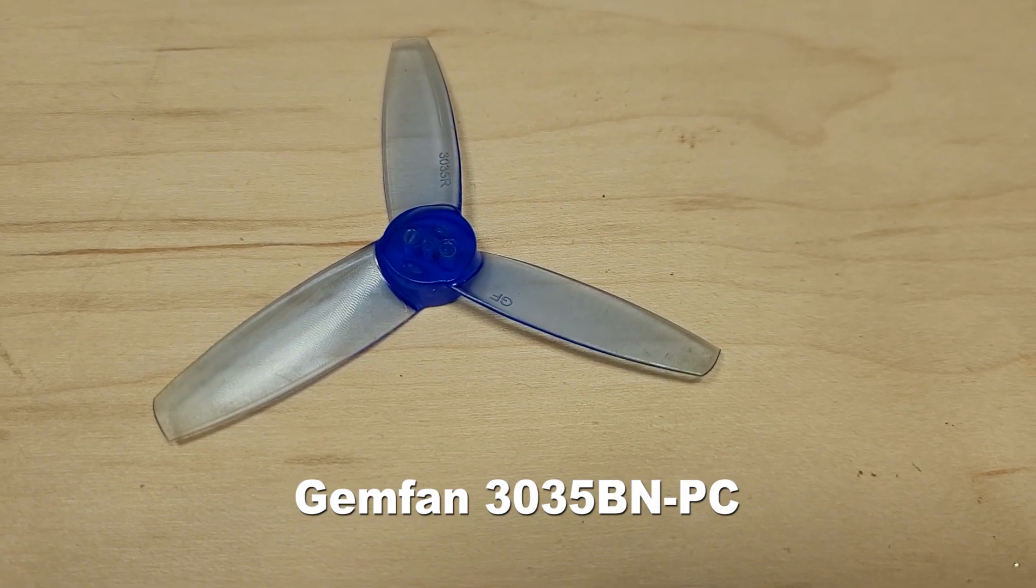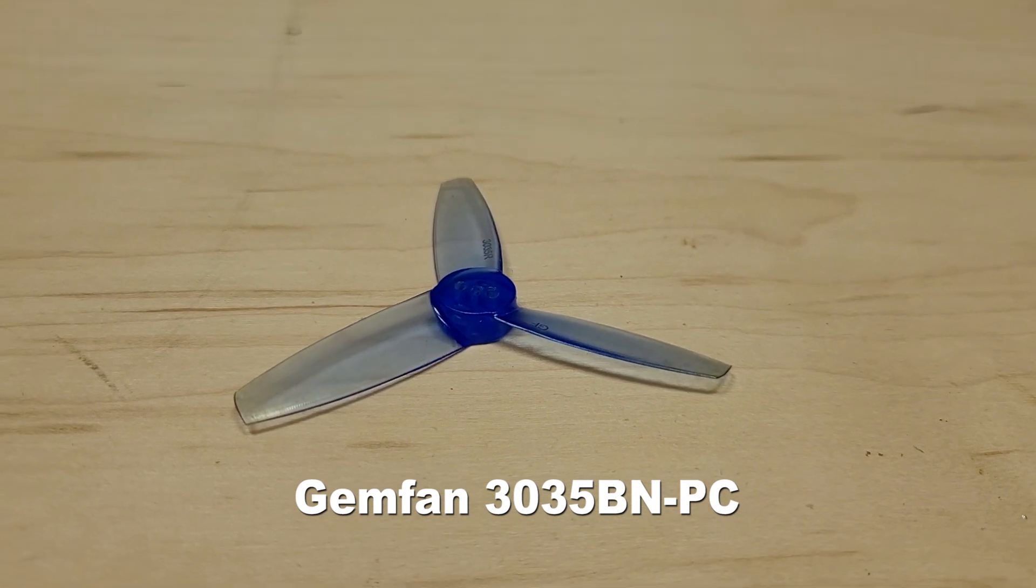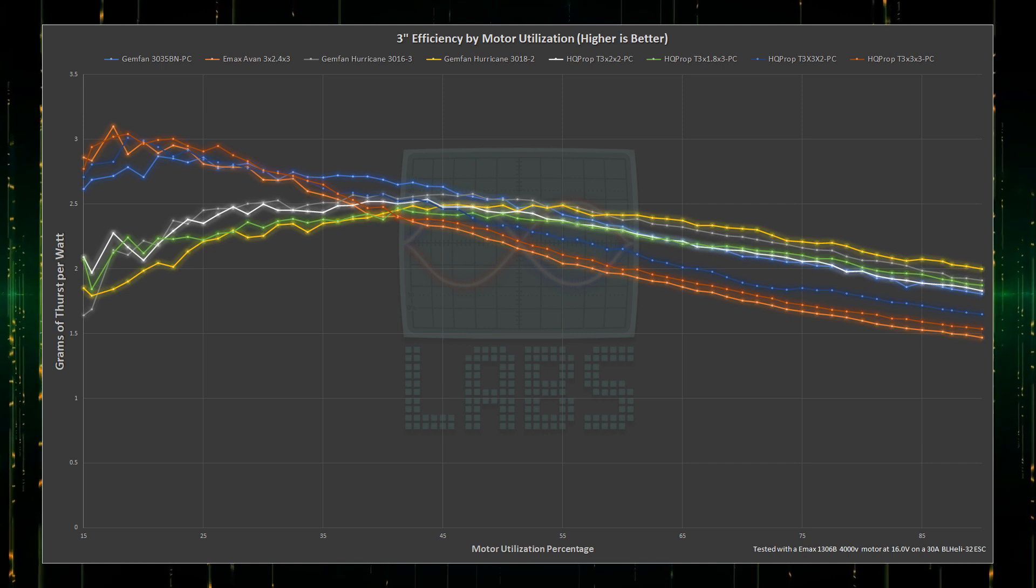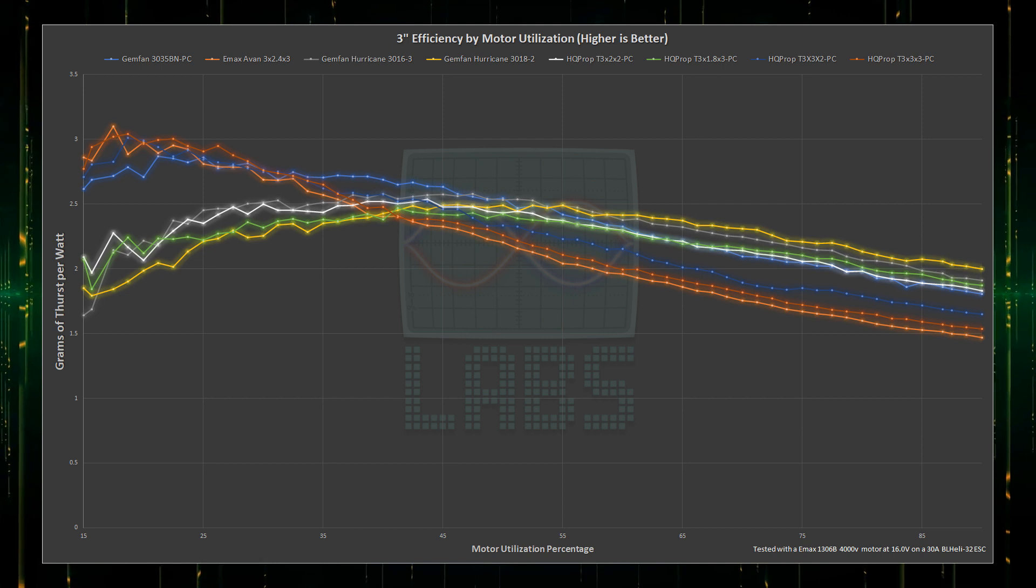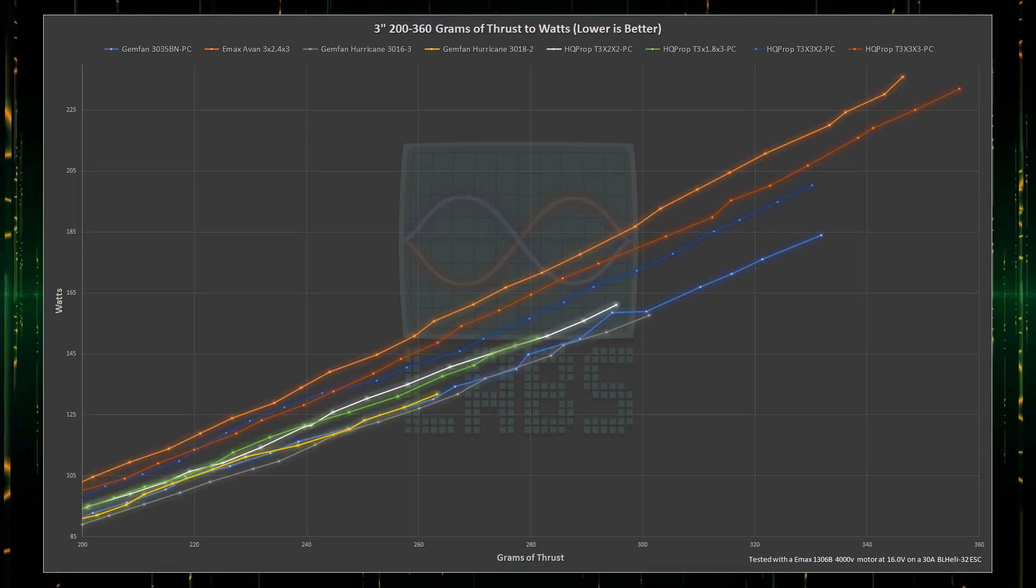The Gemfan 3-blade 3.5-inch pitch propeller wins for best overall efficiency. This propeller is a unicorn in the entire efficiency spectrum and should be seriously considered if you spend a lot of time in the upper throttle range or wish to use a smaller battery that pairs nicely with the extra efficiency at the cost of top end that you might not have been able to use anyway.